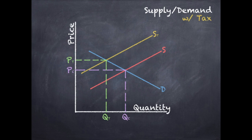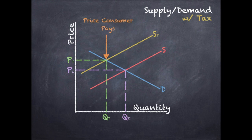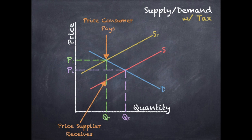You'll notice that the quantity line hits the supply and demand curve now at two different points, so we're going to need to specify what each point is. At the top, you're going to have the price that the consumer pays — that's where the quantity hits the demand curve, effectively what you might call the new equilibrium price if you were looking at the tax supply as the actual supply. You're also going to see where the quantity under the tax line hits the old supply curve, which is going to be the price that the supplier receives.